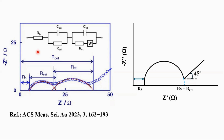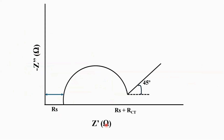Now let's look at the charge transfer resistance. In this schematic, the x-axis represents real impedance and the y-axis represents imaginary impedance, and there is a semicircle. The charge transfer resistance is the diameter of the semicircle, where the right side of the semicircle can be extrapolated to the real axis to find the charge transfer resistance value.